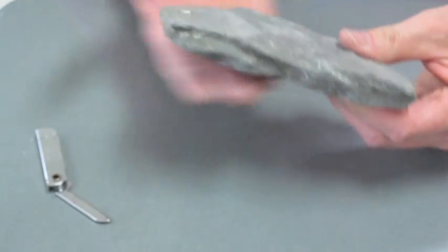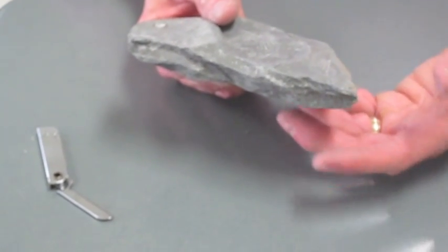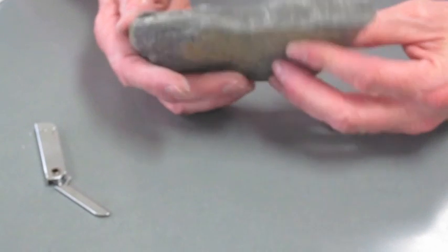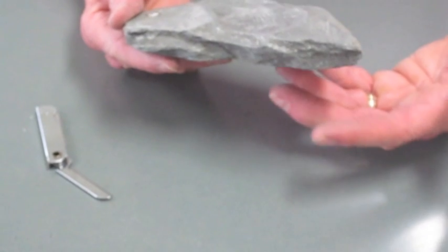But it does like to break off into sheets and along these parallel layers. Sometimes that's called fissility, but it's a characteristic of shale. And so this is a very fine-grained, sedimentary, clastic rock.